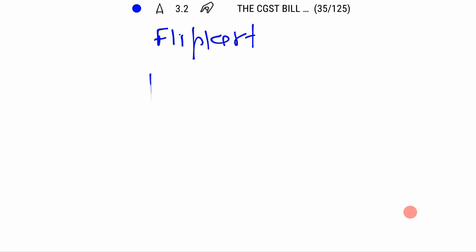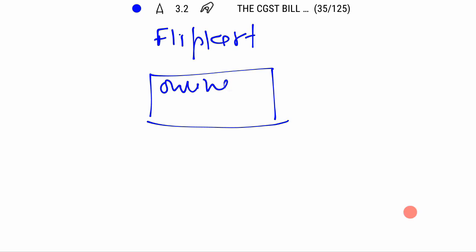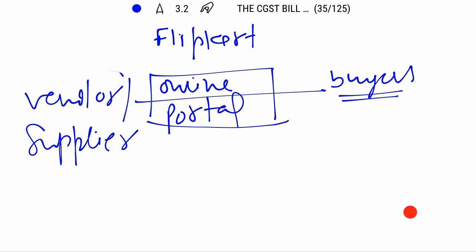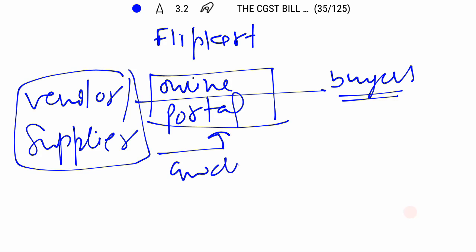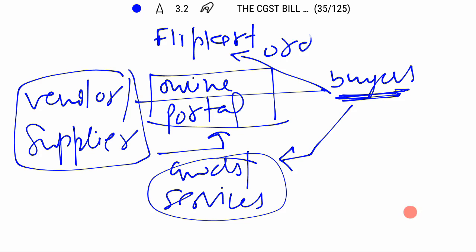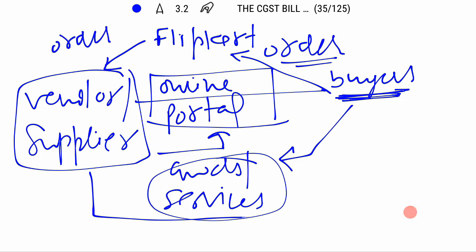If we talk about Facebook or Amazon, then it is an online portal which links a vendor or supplier to a buyer. The vendor or supplier displays goods or services on the online portal. The proposed buyer or customer, according to the display, places the order to Flipkart, and then Flipkart forwards the order to the vendor. The vendor then fulfills by supplying goods or services to the buyer.